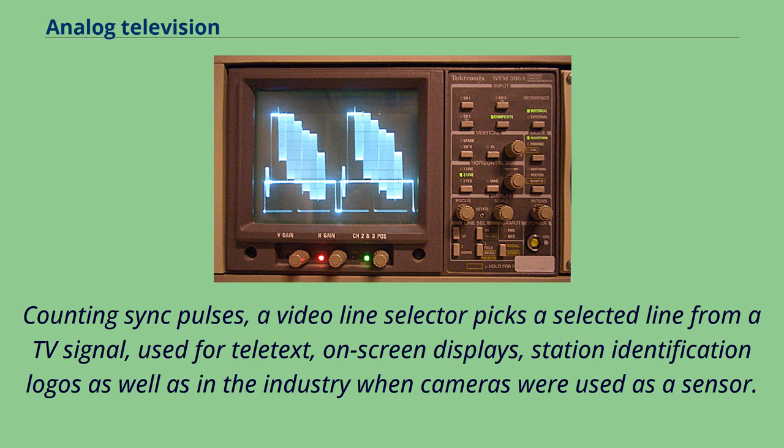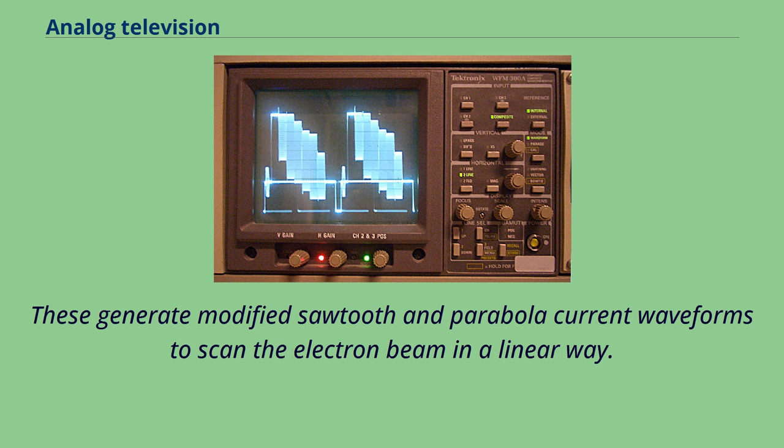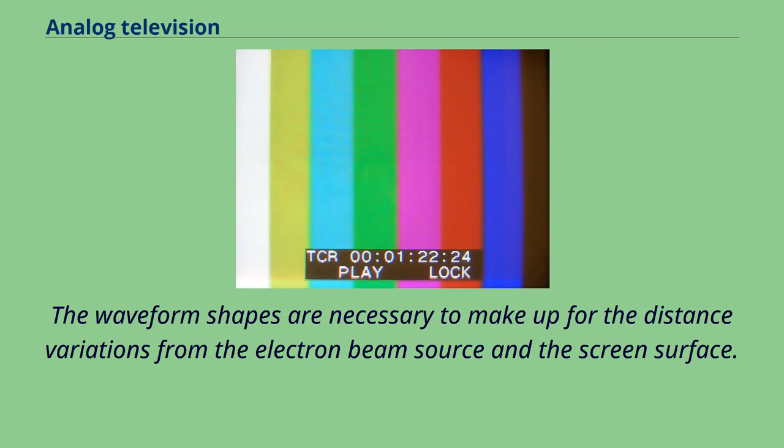The oscillators are designed to free run at frequencies very close to the field and line rates, but the sync pulses cause them to reset at the beginning of each scan line or field, resulting in the necessary synchronization of the beam sweep with the originating signal. The output waveforms from the time-based amplifiers are fed to the horizontal and vertical deflection coils wrapped around the CRT tube. These coils produce magnetic fields proportional to the changing current, and these deflect the electron beam across the screen.